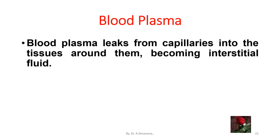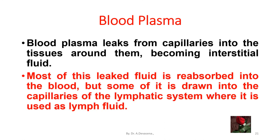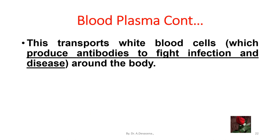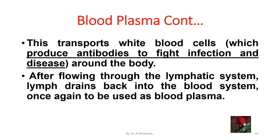Blood plasma leaks from capillaries into the tissues around them, becoming interstitial fluid. Most of this leaked fluid is reabsorbed into the blood, but some of it is drawn into the capillaries of the lymphatic system where it is used as lymph fluid. This transports white blood cells, which produce antibodies to fight infection and disease, around the body. After flowing through the lymphatic system, lymph drains back into the blood system once again to be used as blood plasma.